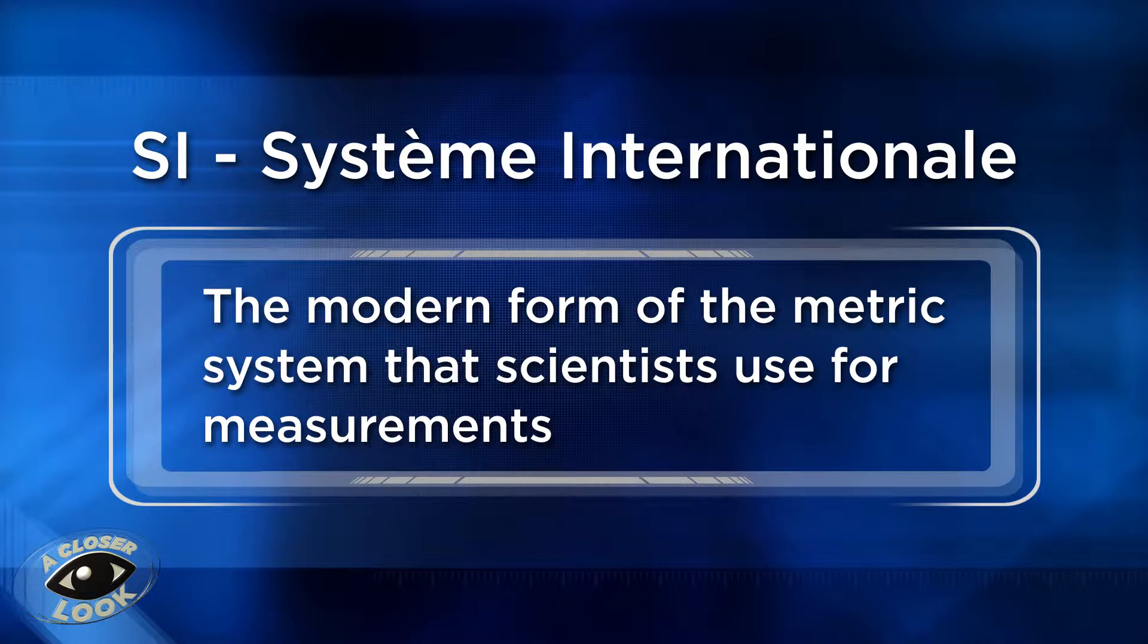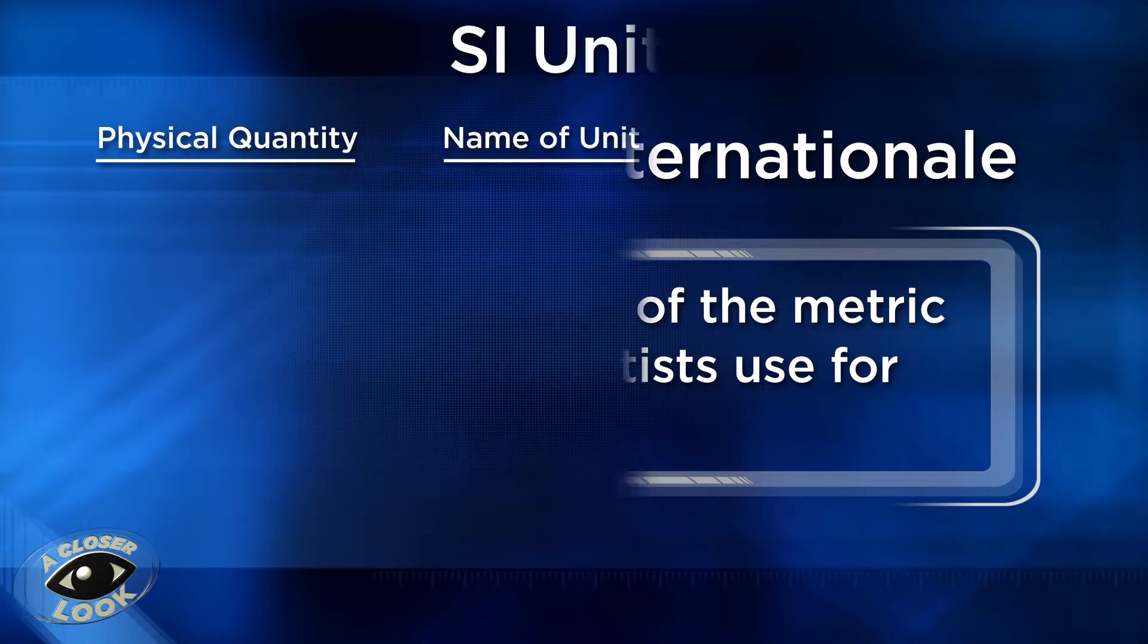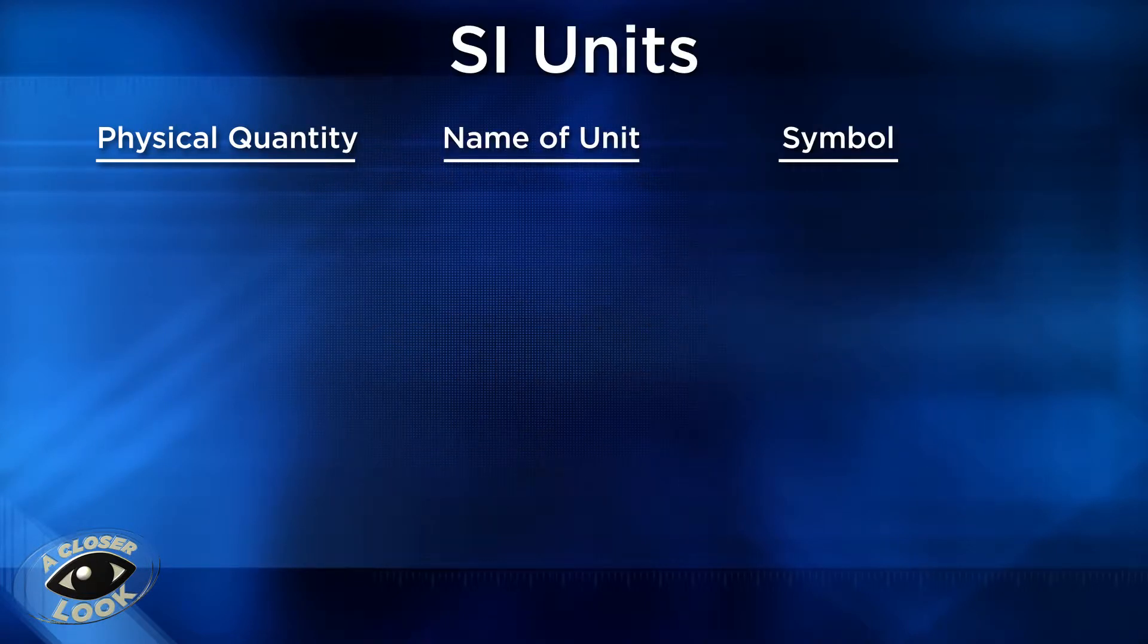It sets the standard for seven base metric quantities, which are fundamental units that cannot be broken down further. In addition to the base units, there are many more derived units. Derived units are obtained by performing calculations using the base units.